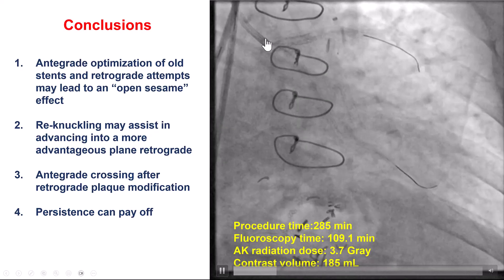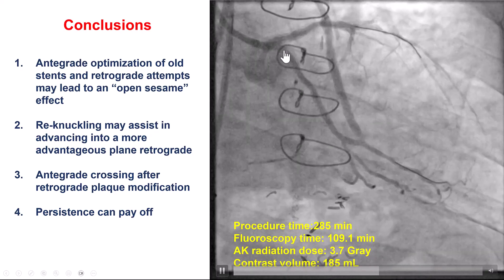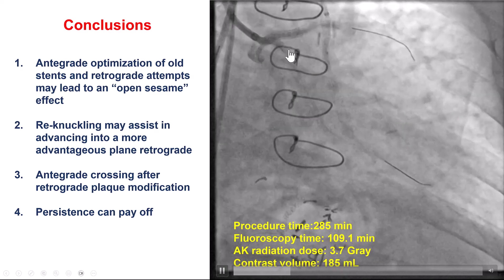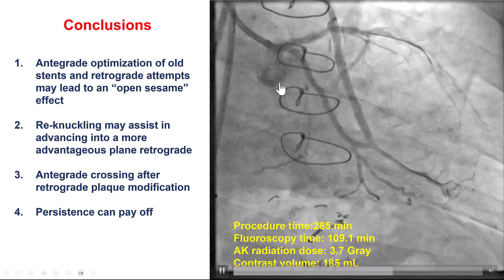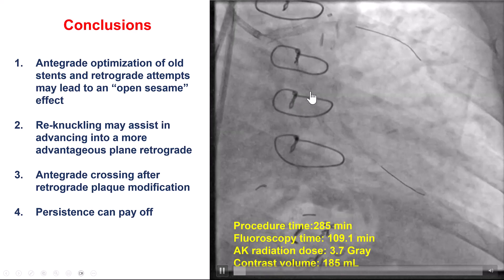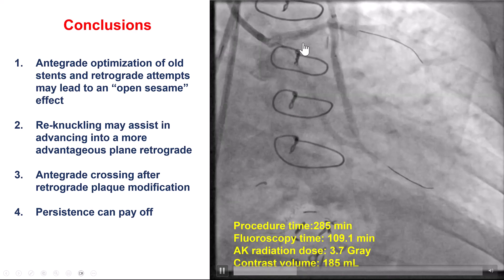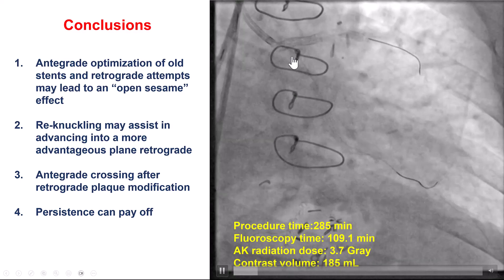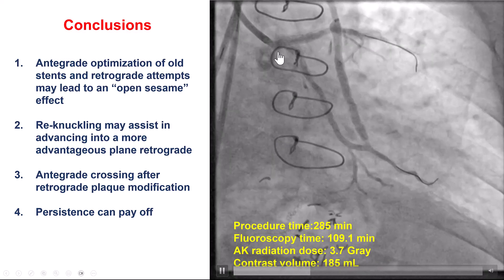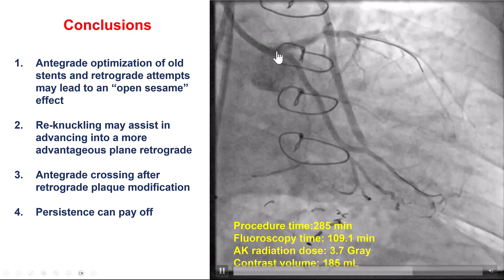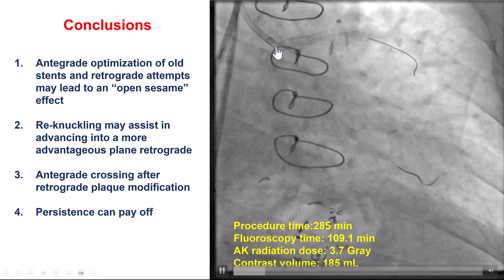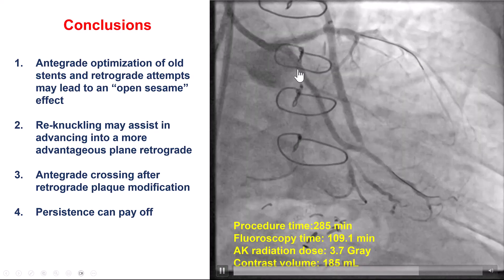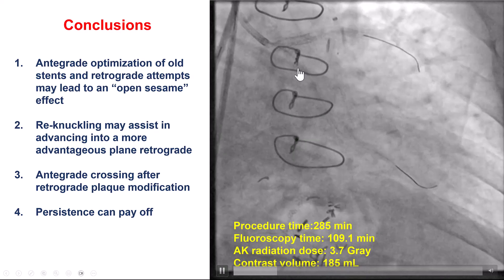And then we were able to cross antegradely, did a reverse CART, followed by stenting. The other lesson here is that persistence is important. We were about to give up when we could not puncture antegrade after multiple attempts, but eventually using the Sasuke Dual Lumen and the Gaia Nextreme, we were able to make that puncture that was critical to the success of the case. Thank you.